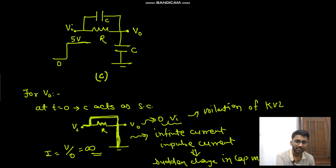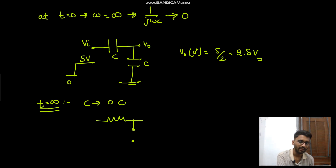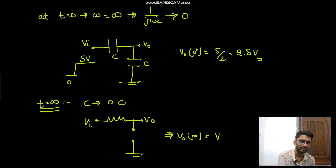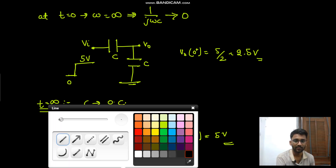At t equals zero-plus we have 2.5 volts. At t goes to infinity, the capacitor will be open circuited, so the parallel combination of RC is replaced by simply resistance R, and the other capacitor is also open circuited. So V0 at t goes to infinity equals Vi, which is 5 volts. From 2.5 volts to 5 volts it will rise.